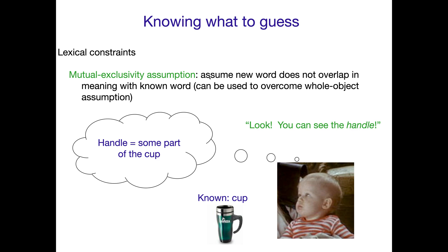So adults kind of hate synonyms too. In our lexicons, we apply this in a more subtle way. Children are just a little more direct about it and they really assume a new word is not going to overlap in meaning with a known one.